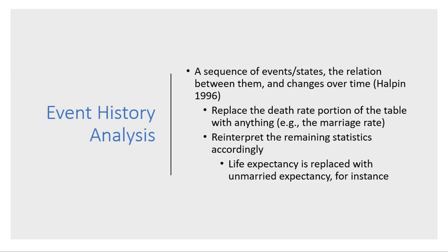Event history analysis is the extension of the life table or survival analysis techniques to other applications. Again, we're going to swap out this notion of survival in the literal sense of people surviving or dying, and replace that with other types of information where a particular event or state changes or occurs. For instance, we could swap out the death rate with the marriage rate. In this case, we'd construct a life table where we're thinking about how long it takes for a particular marriage to fail.